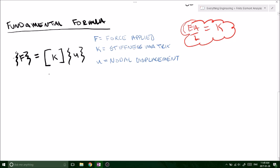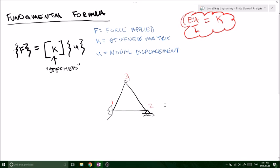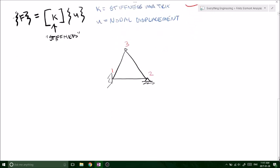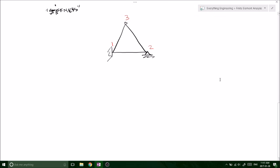So using this formula, this fundamental formula F equals KU, knowing that K is our stiffness. Okay, so going back to our truss element, our truss structure here, we can start analyzing this using the stiffness matrix. We've got different properties. So it's going to be a qualitative analysis just to prove and define the stiffness matrix. We're not going to have any values.